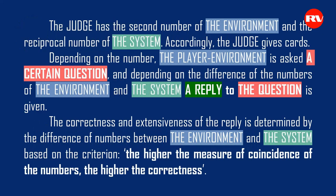As a result of this, the judge has the second number of the environment and the reciprocal number of the system. Accordingly, the judge gives cards. Depending on the number, the player environment is asked a certain question, and depending on the difference of the numbers of the environment and the system, a reply is given. The correctness and extensiveness of the reply is determined by the difference of numbers between the environment and the system. The higher the measure of coincidence of the numbers, the higher the correctness. The criterion can also be determined differently — the lower the coincidence, the higher the correctness. The important thing is to determine this before the beginning of the game.